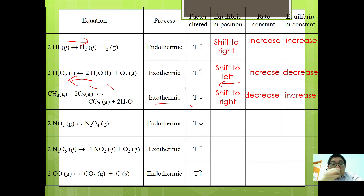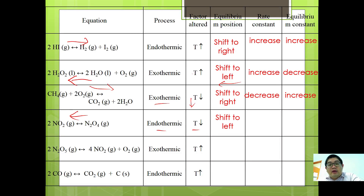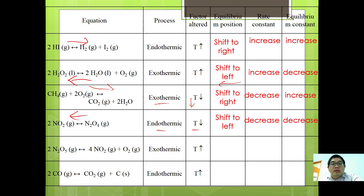Fourth example: 2NO2 gives N2O4, and the reaction is endothermic with temperature decreasing. When temperature decreases, equilibrium shifts to the left. When shifting left, the rate constant decreases as temperature decreases. Since shift to the left means more reactant is formed, the equilibrium constant will also decrease.